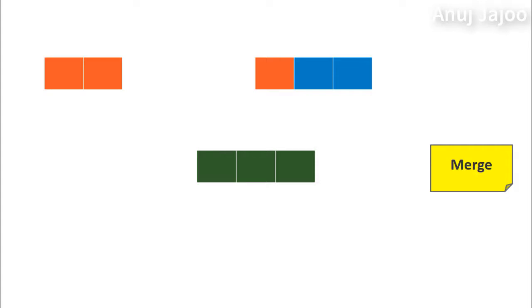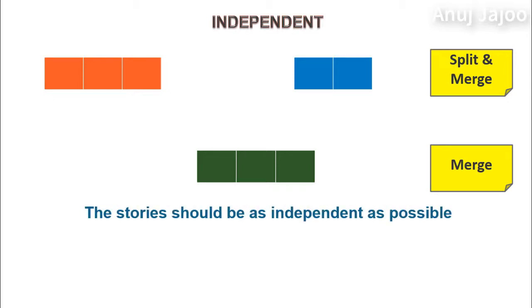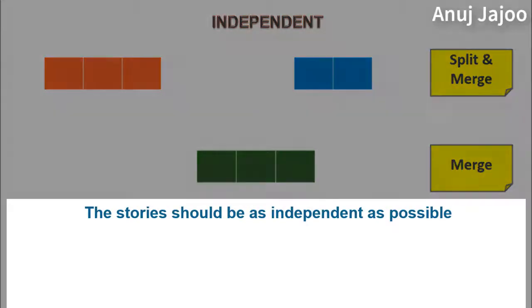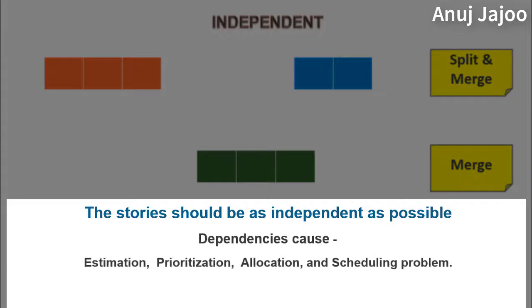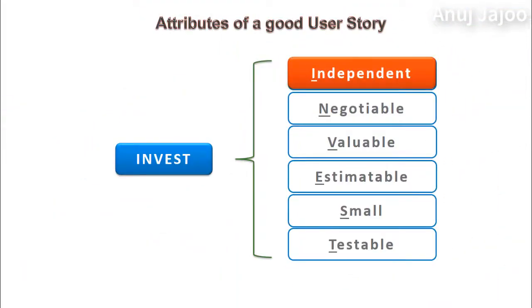The story should be as independent as possible, because dependencies lead to problems in estimation, prioritization, allocation, and scheduling. When a more valuable story depends on a less valuable story, the team has to spend time on the less valuable story. In other words, an independent story means it can be developed in any order.